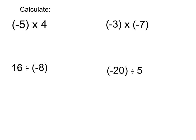So let's have a go. The first one here, negative 5 times 4. So let's do the multiplication. 5 times 4 is 20. The signs are different because I have a negative multiplied by a positive, so it's negative 20.